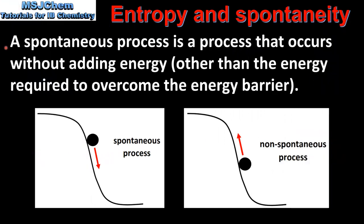A spontaneous process is a process that occurs without adding energy, other than the energy required to overcome the energy barrier. A spontaneous process can be compared to a ball rolling down a hill — once given an initial push it will roll to the lowest energy state. A non-spontaneous process can be compared to a ball rolling up a hill, where energy must be continuously supplied.